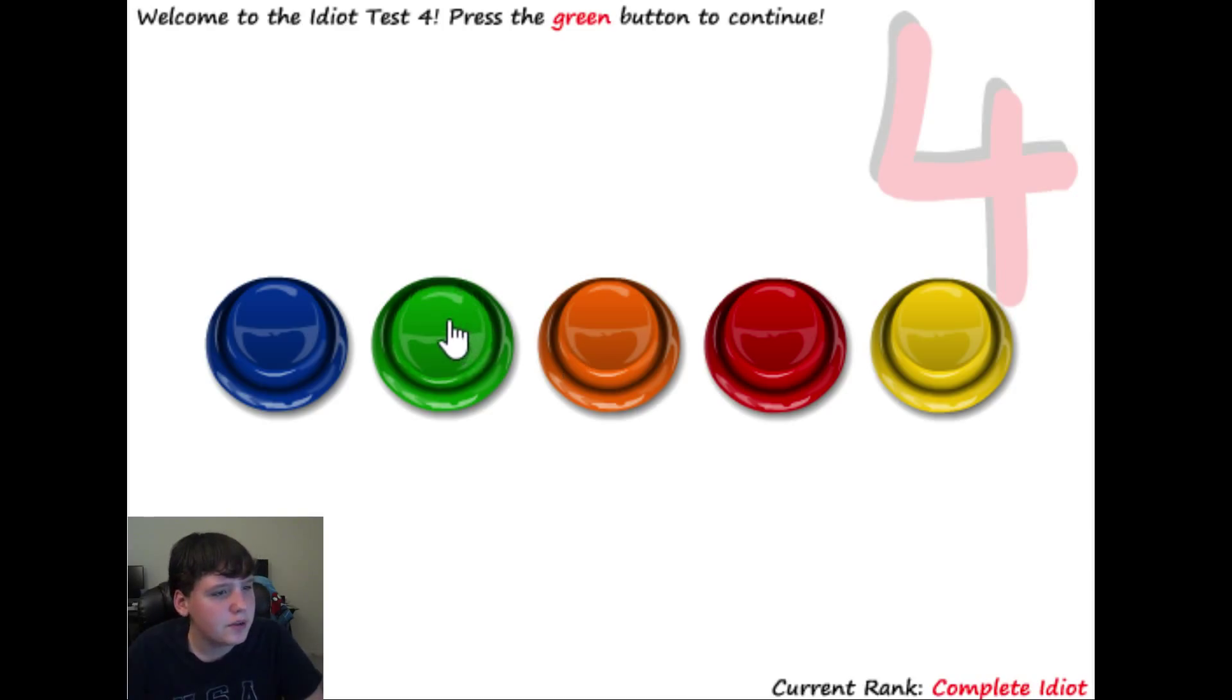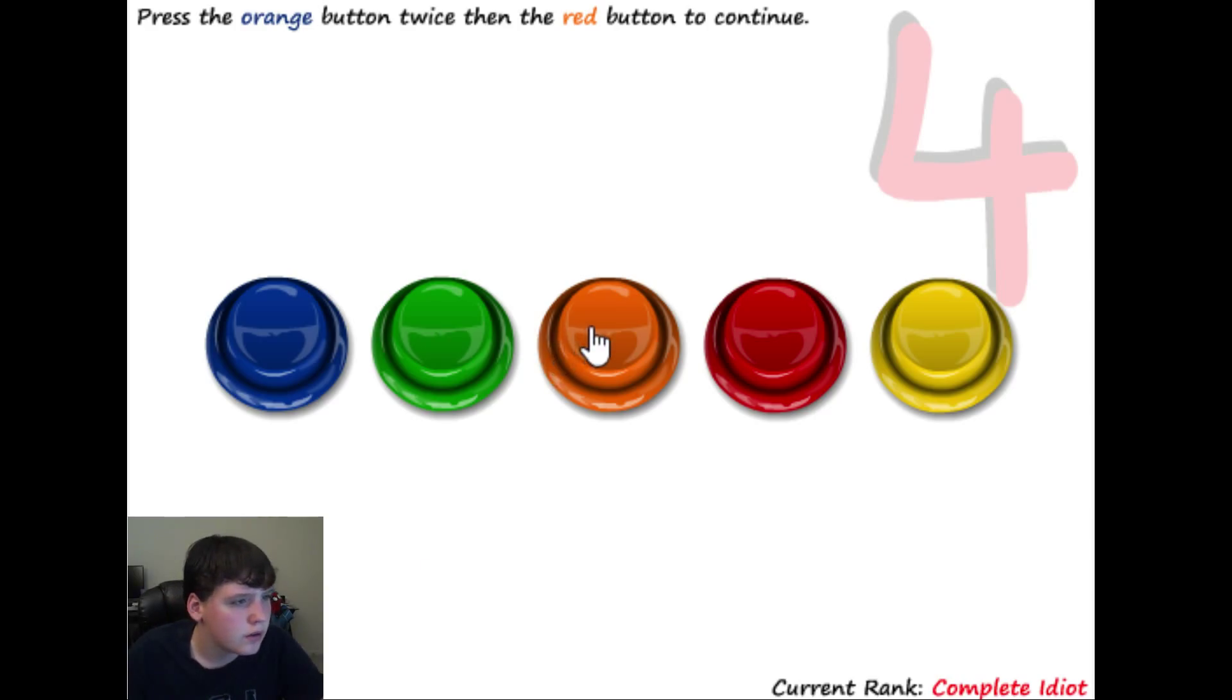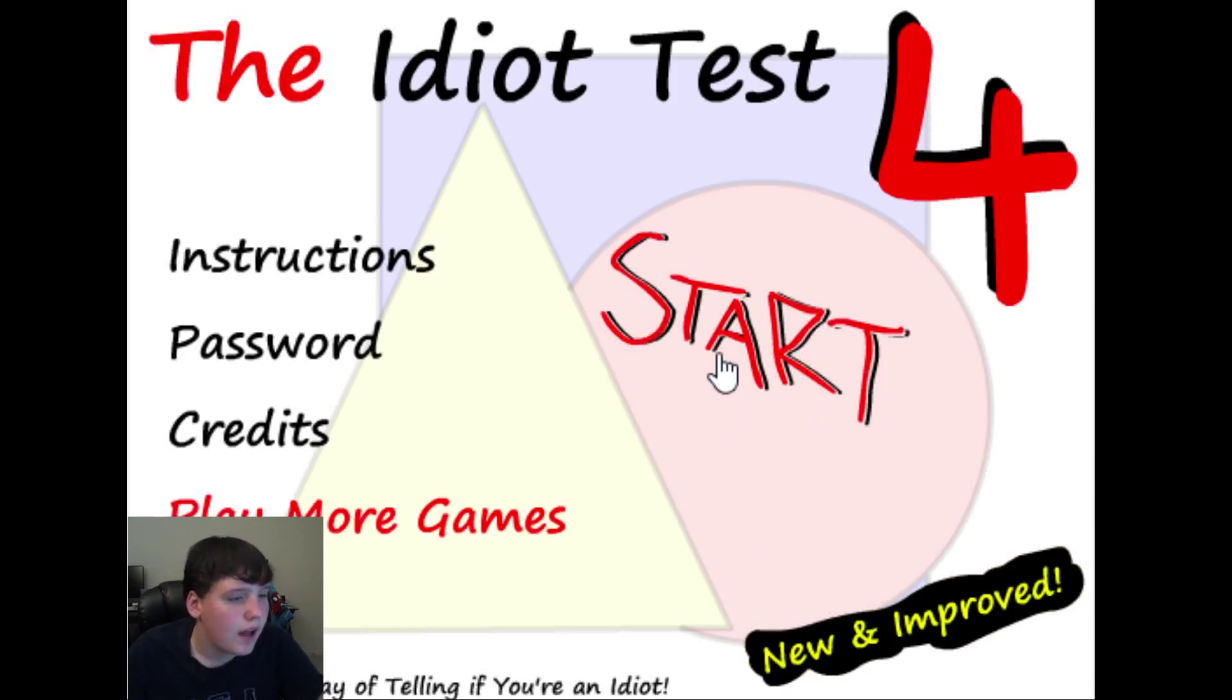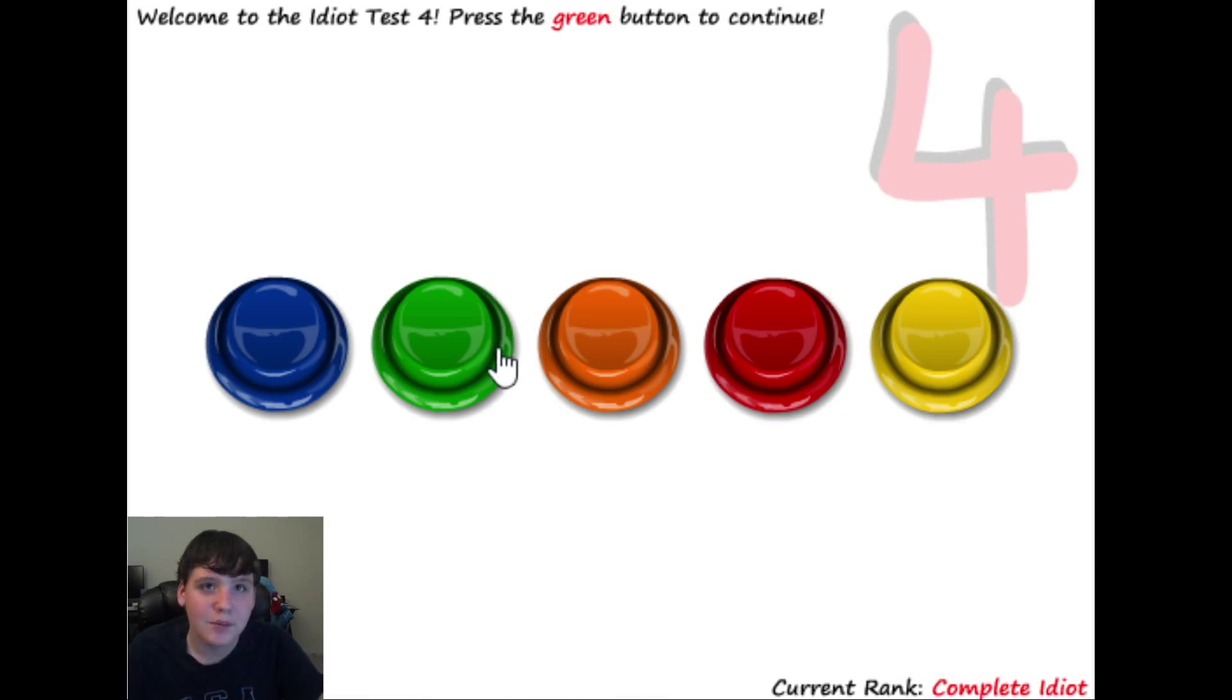Press the green button to continue. Press the yellow button to continue, then the blue button. Yellow, blue. Press the orange button twice, then the red button to continue. Okay. Orange and red. Oh, I think I wasn't listening there. Let's try that again. Ah, I guess I am a complete idiot. Alright, green, yellow, then blue. Okay, yellow. Okay, orange button twice, and then red. There we go.